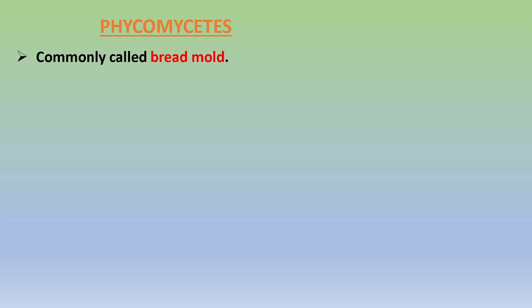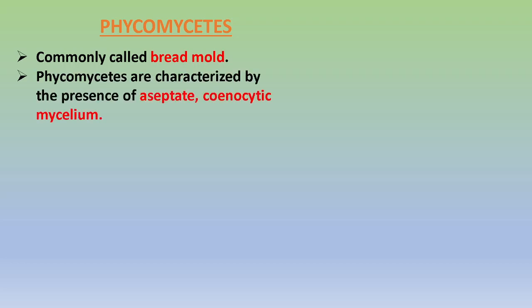It is a very common observation: when a bread piece is left uncovered or left outside in a warm, moist environment, after a few days you can see some cottony growth upon the bread piece. That fungus growing upon it belongs to the group Phycomycetes, which is why they are commonly referred to as bread mold. They are characterized by the presence of an aseptate coenocytic mycelium.